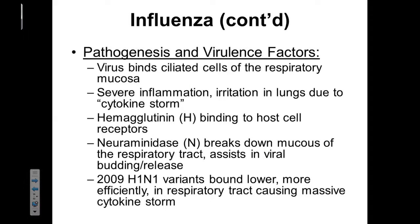The pathogenesis and virulence factors of influenza include the fact that the virus is going to bind to ciliated cells of our respiratory mucosa. There is a mucociliary escalator within our respiratory tract that has many billions of ciliated cells. After binding, severe inflammation is going to be initiated. This irritation can also occur in the lungs and is due to a cytokine storm.